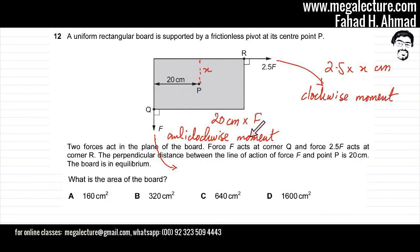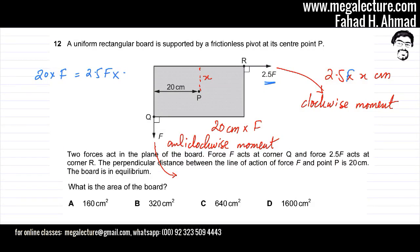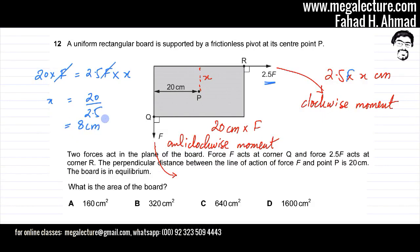For the board to be in equilibrium, the two moments are going to cancel out. So I make them equal: 20 × F = 2.5F × X. The F cancels out, and solving for X gives X = 20 divided by 2.5, which equals 8 centimeters. So X is 8 centimeters, and if I double that, the height of the board is 16 centimeters.